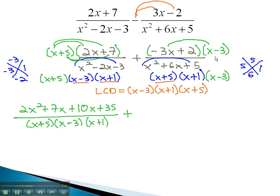So we can FOIL to get negative 3x squared, plus 9x, negative times a negative, plus 2x, minus 6, over our common denominator, x plus 5, x plus 1, x minus 3.